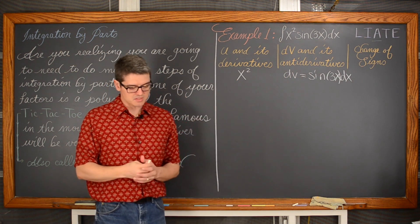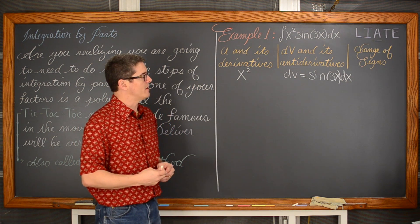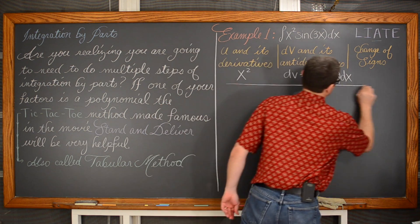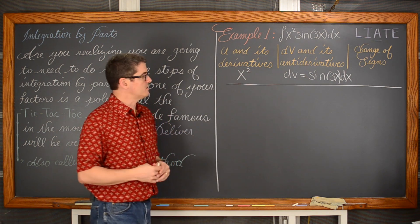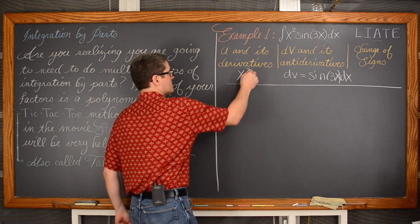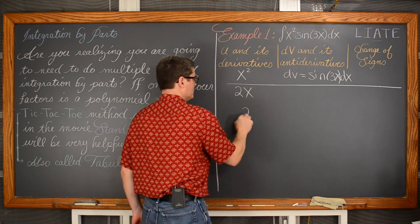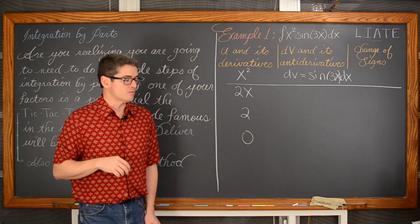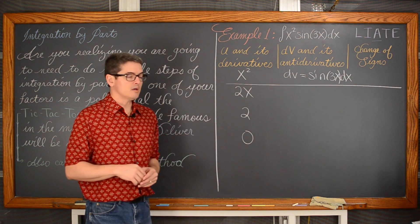What we are going to do is set up a table with headers. In the first column we are going to take the derivatives of u until we get down to zero. The derivative of x squared is 2x. The derivative of 2x is just 2. And then the derivative of a constant is zero — and that is where you stop. We stop where that column of derivatives of u becomes zero, and that will be the last line of our table.